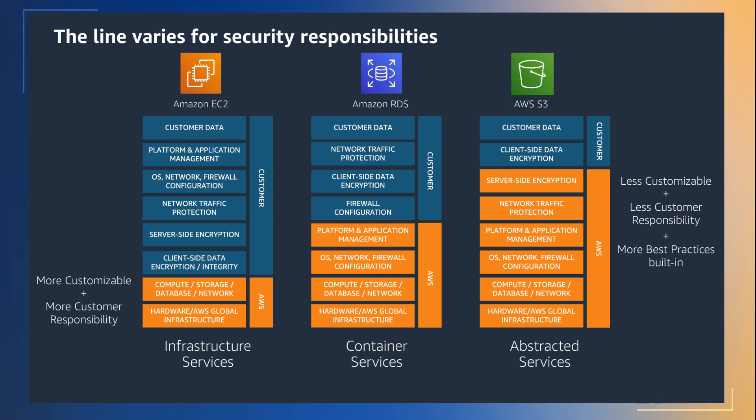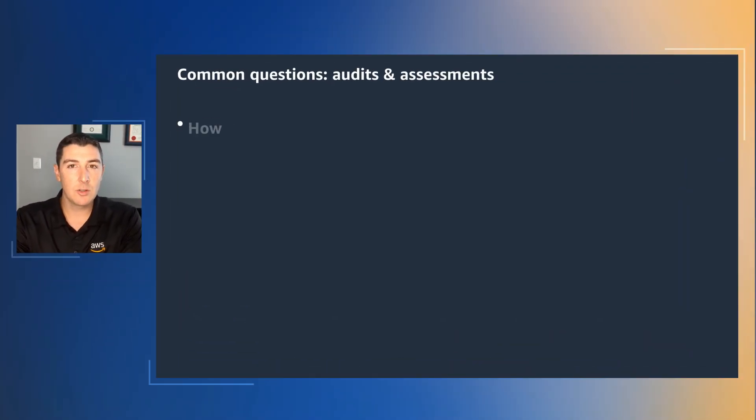Then if we take RDS, AWS handles the maintenance and patching of the operating system and database engine, while the customer controls the network access to the database instance by configuring security groups, setting up database users, managing their permissions and compliance configuration settings such as CIS benchmarks. And for S3, the customer is responsible for managing their data, who has access to it, and the encryption settings.